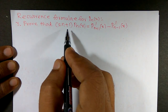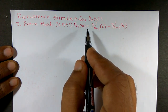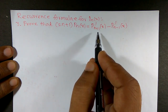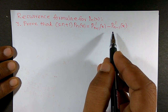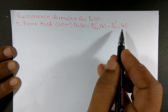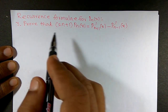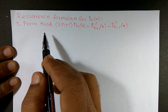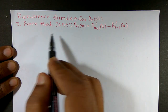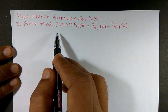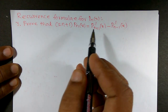Prove that (2n+1) · Pₙ(x) is equal to P'ₙ₊₁(x) minus P'ₙ₋₁(x). This is another recurrence relation for Legendre polynomials. We want to prove the left hand side is equal to the right hand side.